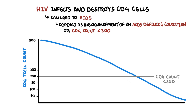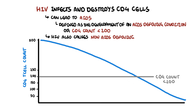These AIDS-defining conditions develop because the body's immune system is deficient, and so all these types of infections or malignancies can show up. However, HIV also causes non-AIDS defining conditions, which we will look at first.